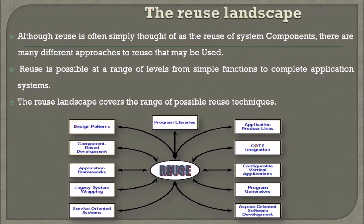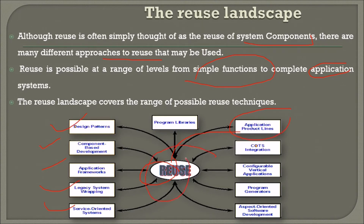Let us see the reuse landscape. Although reuse is often simply thought of as reusing system components, there are many different approaches to reuse. Reuse is possible at a range of levels, from small simple functions to complete application systems altogether. The reuse landscape covers the range of possible reuse techniques: design patterns, component-based development, application frameworks, legacy system wrapping, service-oriented systems, application product lines, COTS integration, configurable vertical applications, program generators, and aspect-oriented software development.